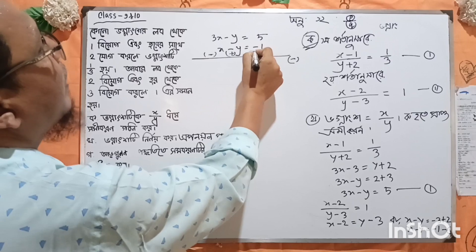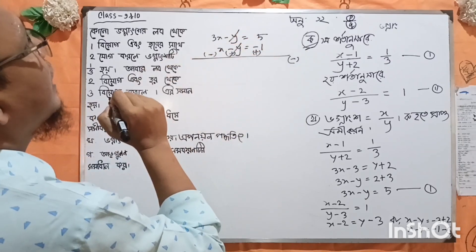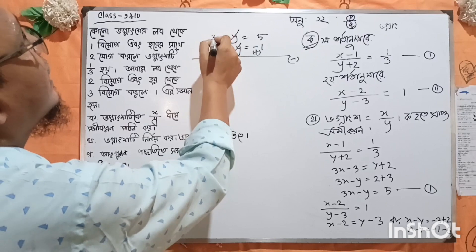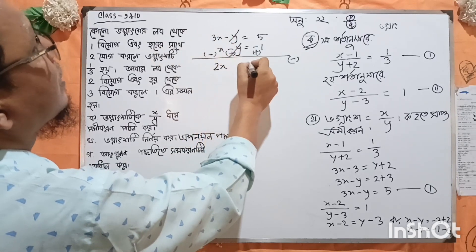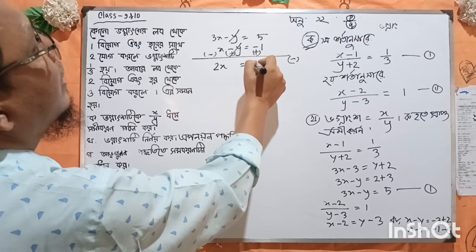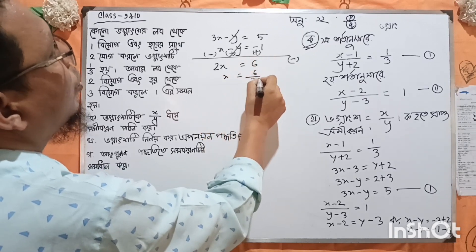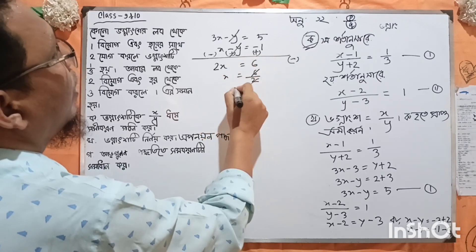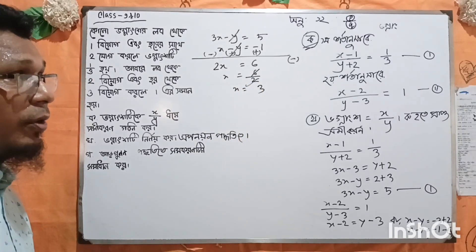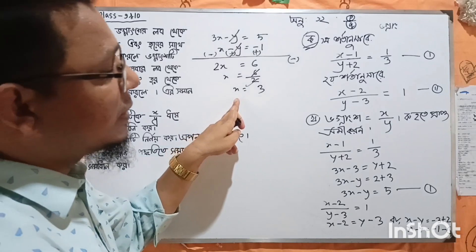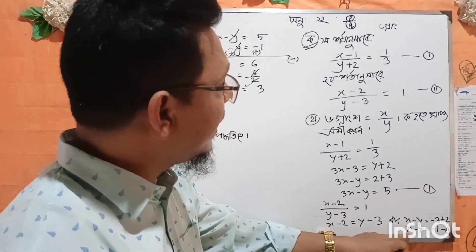After cancellation, the x terms combine: 3x minus one x gives 2x equal to 6. Then 1x is 6 by 2. So x is equal to 3. Now we write x in our solution.